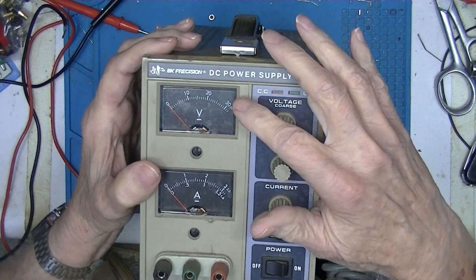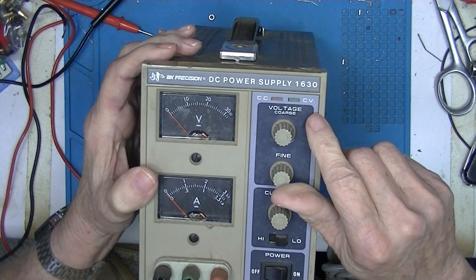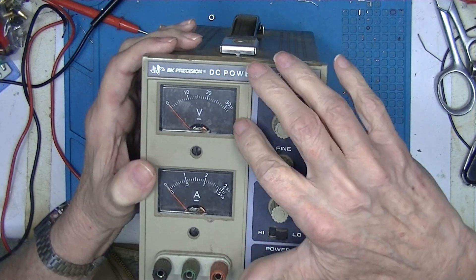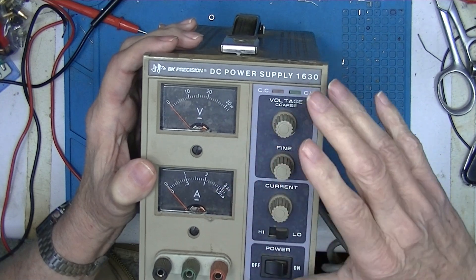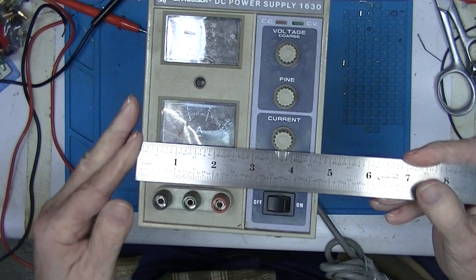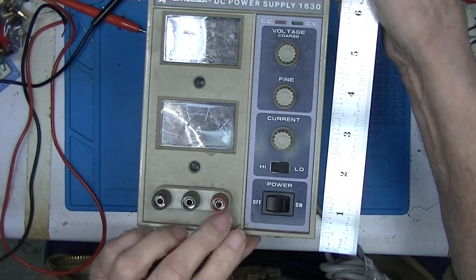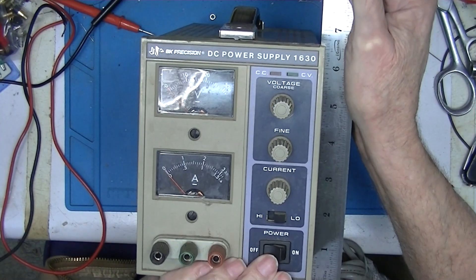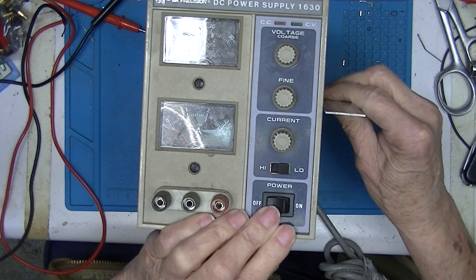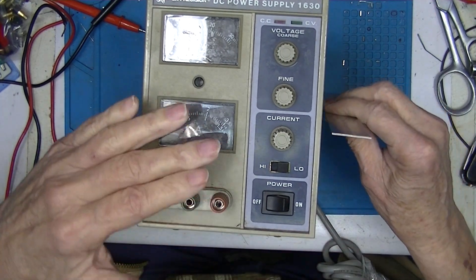So what we have here is a BK Precision 1630 power supply. I believe it's rated 30 volts at 3 amps. It's not in bad shape, a little dirty here and there. Four and three quarters inches including the feet, six and a half, and it's 11 inches deep from the deck to the top not counting the knobs.